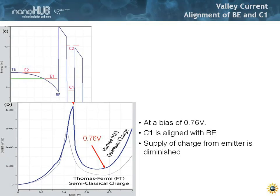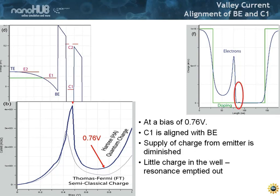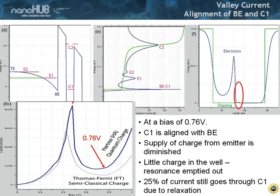Now let's look at what happens in the valley current at 0.76 volts, where we align the central resonance again with the bottom of the emitter. At that stage there is very little supply from the emitter and the well is empty. The supply of charge from the emitter is diminished, there is little charge in the well, and the resonance has emptied out. It didn't change a whole lot compared to without charge self-consistency — there is a little bit of supply of current from the tail ends of E1 through C1. You see these echoes of E1 and E2 in the current density, and about 20% of the current is flowing through C1, which is now much lower than the peak current.